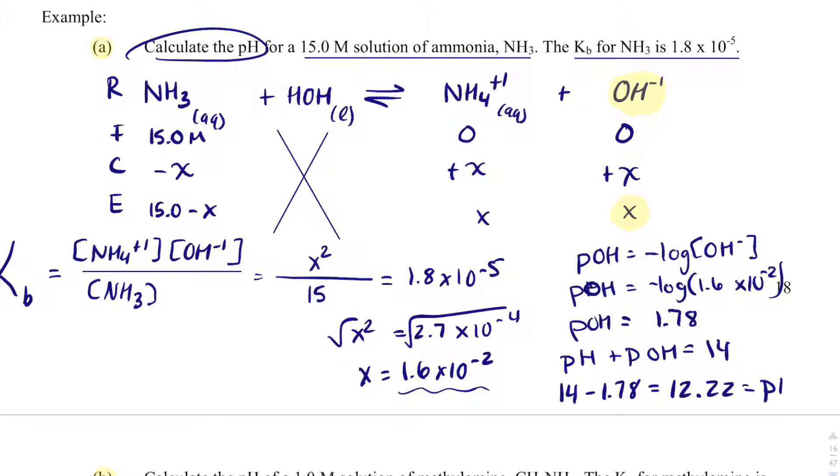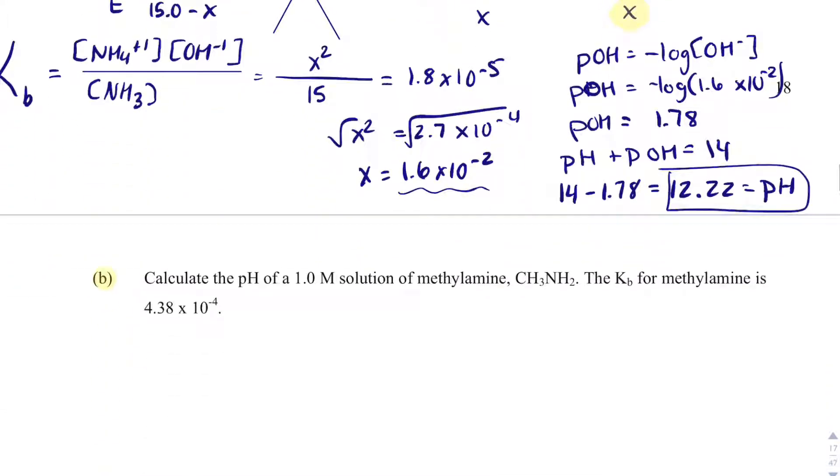And that should make sense. This is ammonia is behaving as a base. We just see that up here. It is, ammonia is producing some hydroxide. And because of that, I should expect the pH to be higher than 7. Okay. Let's look at another one.